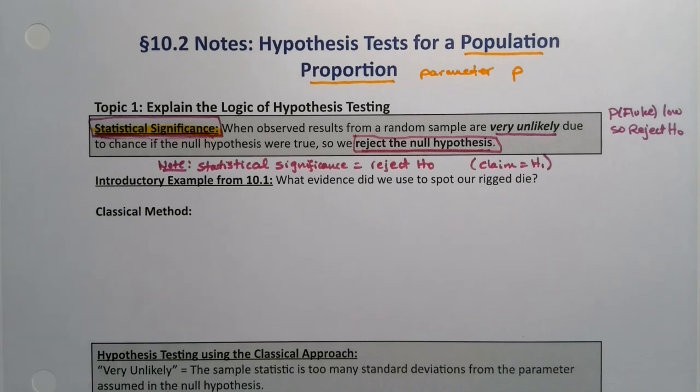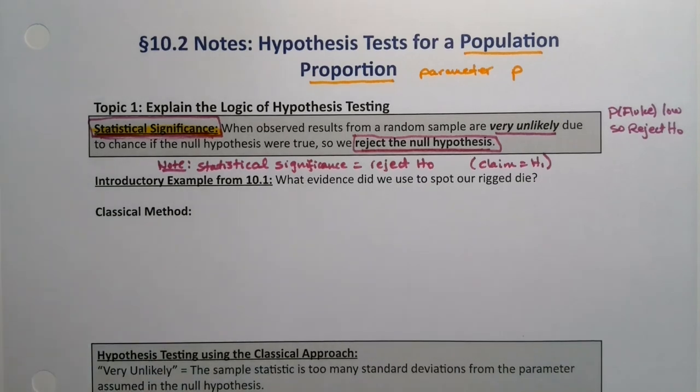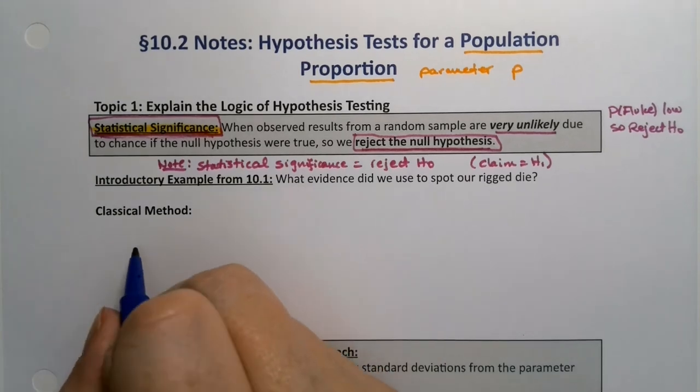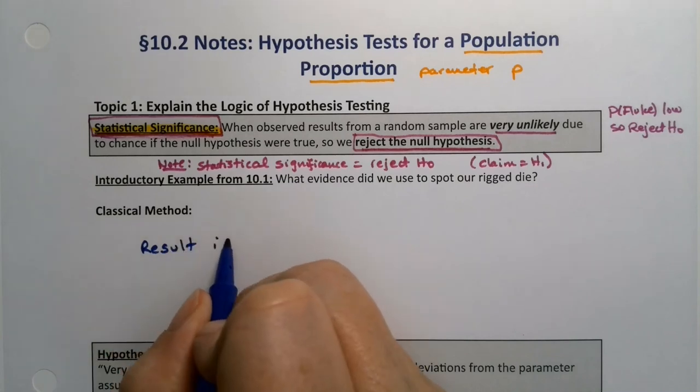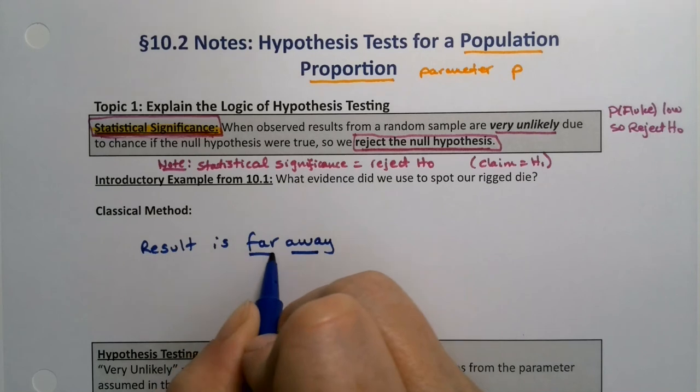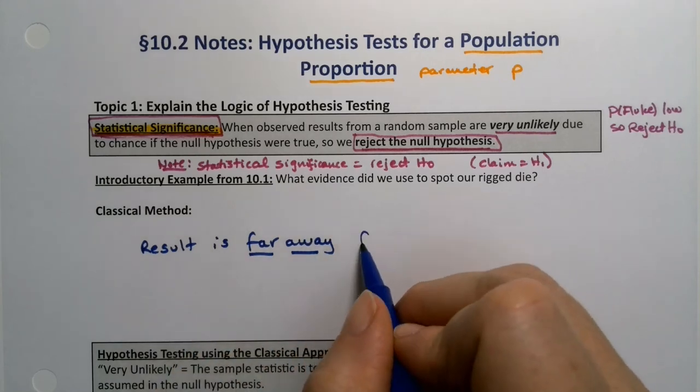Now what were the evidence types that you could have for this? Well, remember with our rigged die, you can have your classical method, which is when your result is far away from what was expected, from the rest of the group.